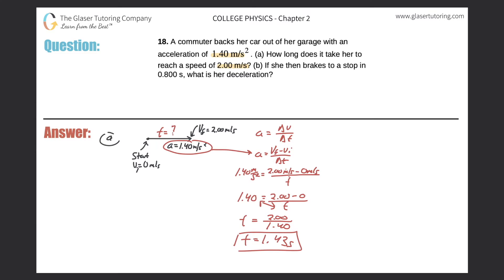Now let's take a look at part B. If she then brakes to a stop in 0.8 seconds, what is her deceleration? Okay, so basically if we continue this picture on out, she's going to brake and eventually come to a stop.